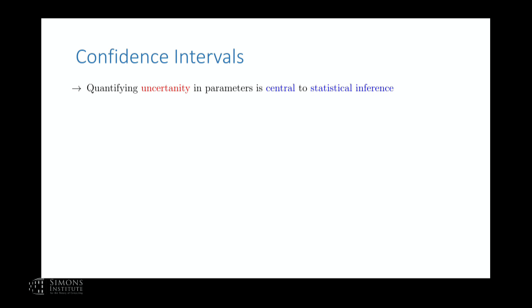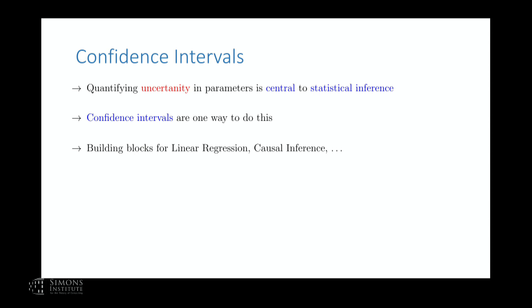We'll start with confidence intervals. I'm sure everybody knows what they are — this is just a quick outline to put us all on the same page. One of the central things about statistical inference is quantifying uncertainty in parameter estimates. We don't just want point estimates; we also want uncertainty quantification. Confidence intervals are one way of doing this, and they're very popular building blocks for more complicated tasks like linear regression, causal inference, or any kind of model building.